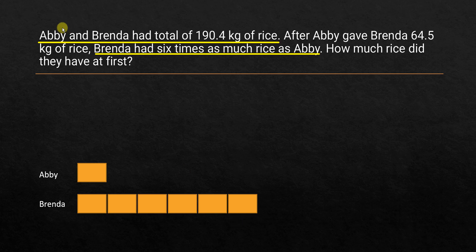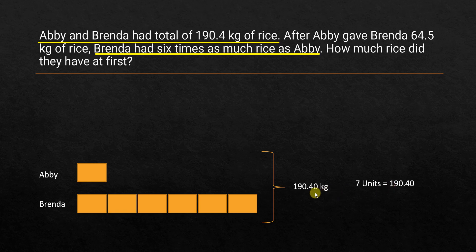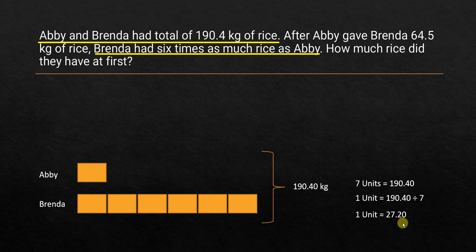Abhi and Brenda had a total of 190.40 kg of rice, which means all these boxes put together equal 190.40 kilograms. These are equal-sized units, so in total we have seven units. Seven units represents 190.40 kilograms, so one unit is 190.40 divided by seven, which gives us 27.20. One unit is equivalent to 27.20 kilograms of rice.